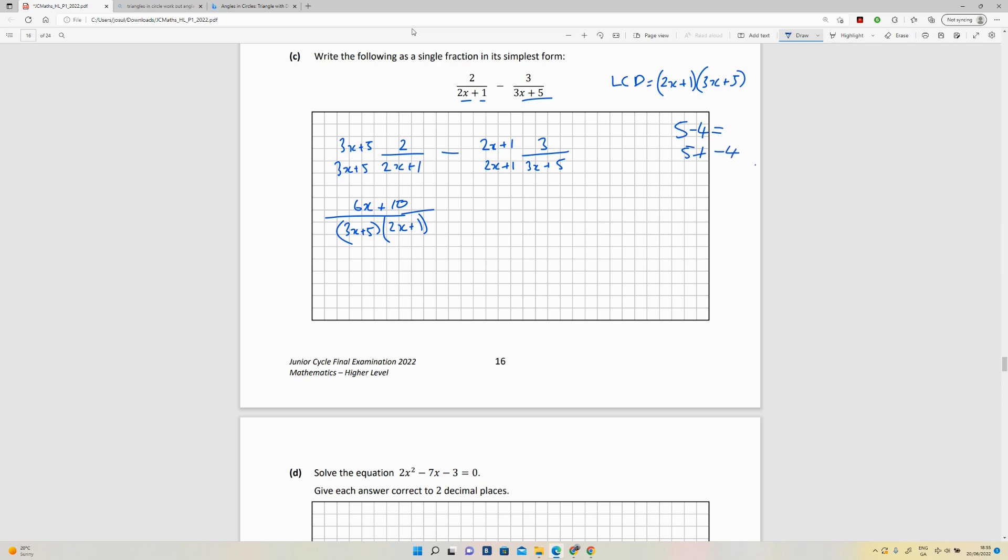So we want to use the same principle here, so I'm going to say plus minus 3 multiplied by 2 which is minus 6x, and minus 3 multiplied by 1 is minus 3, all over 3x plus 5 and 2x plus 1.